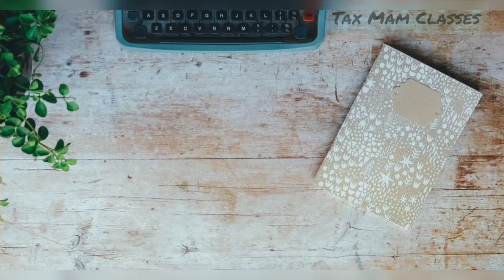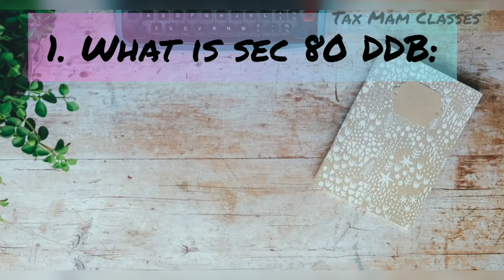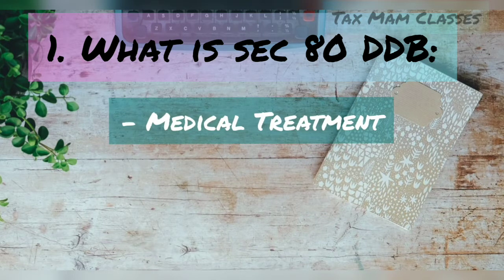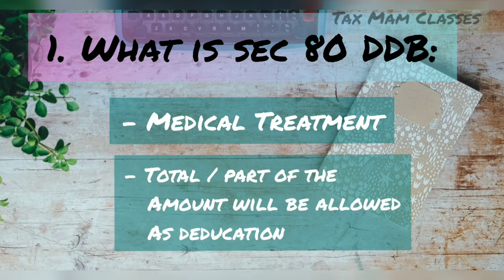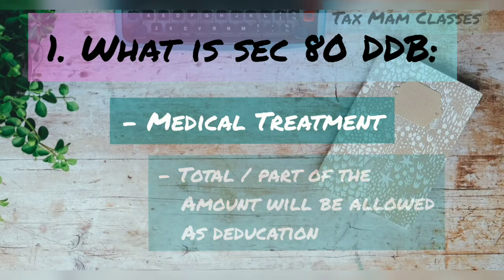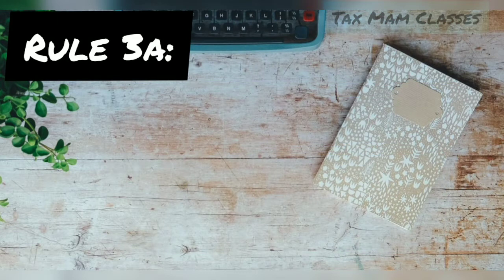Coming to the first point — what is Section 80DDB? This section talks about medical treatment. All the expenses that are part of the expenditure met for medical treatment will be allowed as deduction. The diseases covered are those described under Rule 3A of the Income Tax Rules.